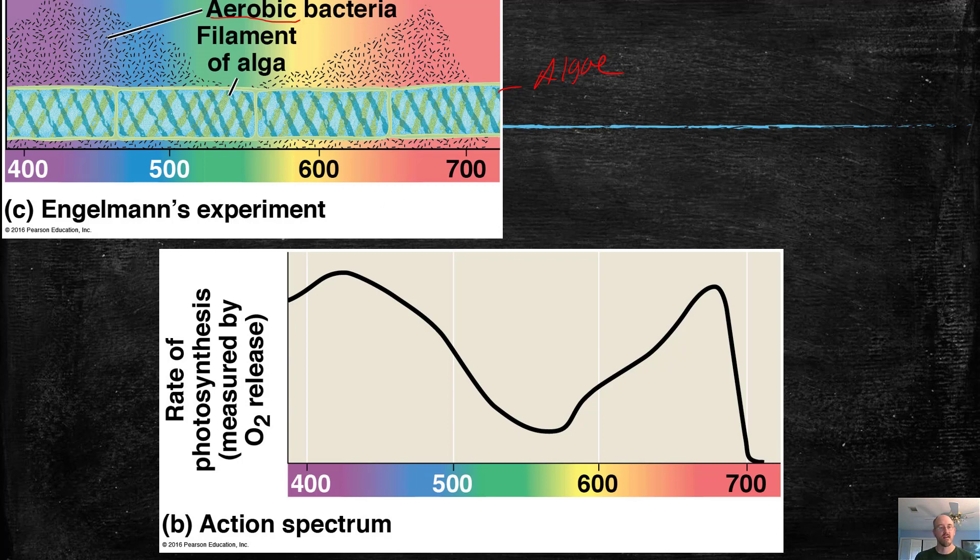And look, the algae - I'm sorry, the bacteria - formed a clump over here, and they formed a clump over here. So he could see that these algae really like it right over here in the red, and they like it way over here in the bluish purple. That's where oxygen is made. That corresponds exactly with what you get when you use modern technology and you look at what colors are absorbed by a leaf.